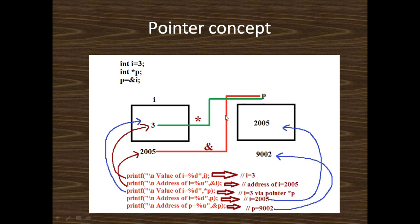p is also an integer variable which points to the address of the integer variable i using the ampersand sign: p = &i. That means the value of p becomes the address of i, so we write the value of p as 2005. Since p is also an integer variable, it also has its own address. We consider the address of p is 9002.